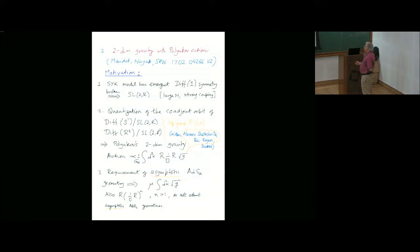The motivation is the following. I already mentioned that the SYK model has an emergent DIF-1 symmetry which is broken to SL2R. Now, immediately, the moment you look at something like this, if you have a certain history, you are led to discussing how to quantize this type of model using the method of coadjoint orbits. It is a very well studied field.